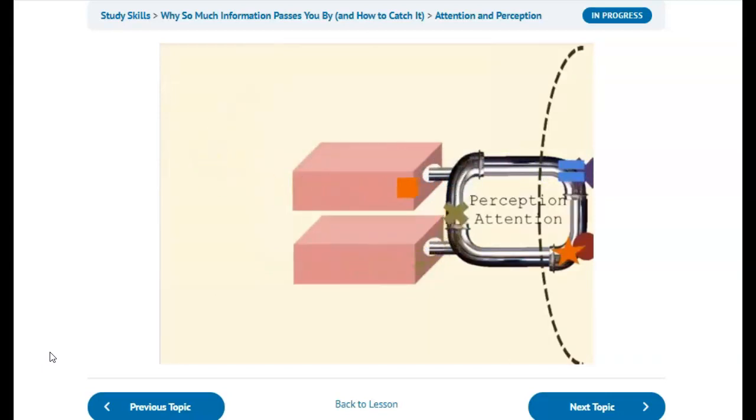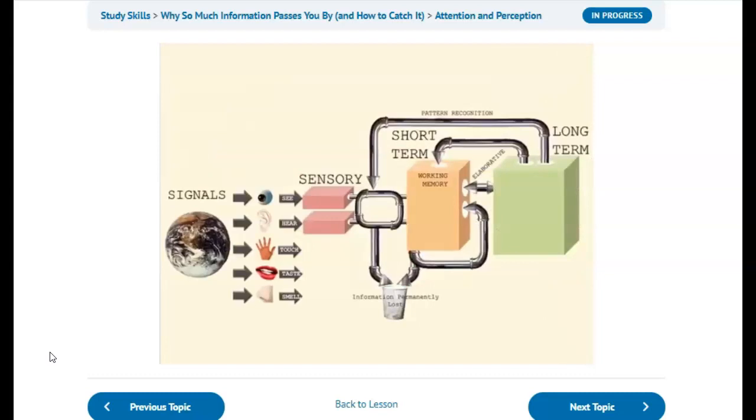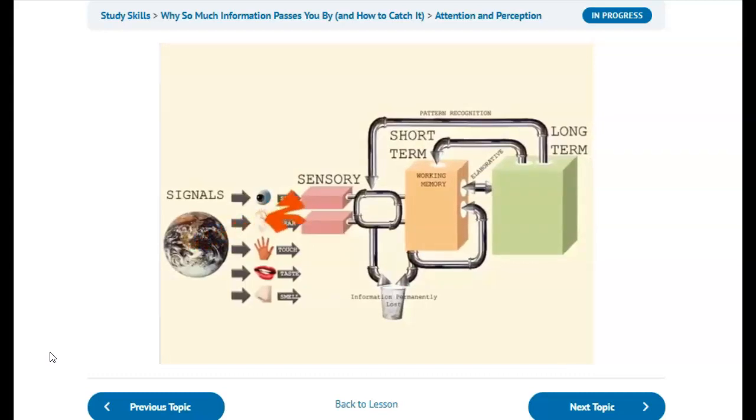Signals that you don't pay attention to are lost. When signals come into our sensory stores, they're just raw data. They don't mean anything to us yet. Perception is the process of transforming the raw signals into meaning.